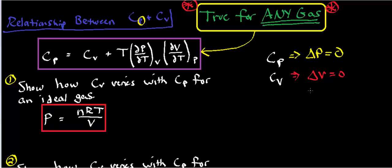In some problems, they may give you a C sub P or a C sub V. For example, suppose in a problem they give you C sub V, but you're in an isobaric system. If the setup calls for C sub P and you're not given C sub P — you're given C sub V — the question is: how do you go from C sub V to find C sub P, which is what you want?